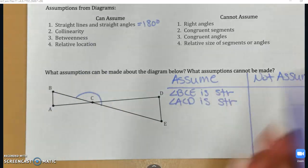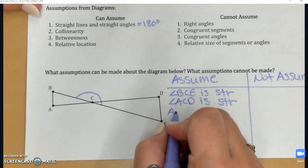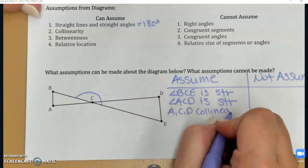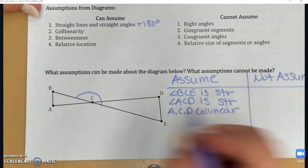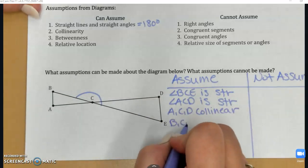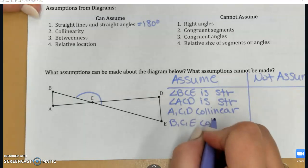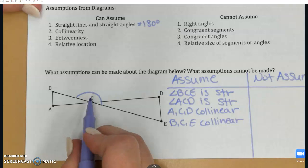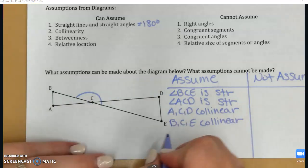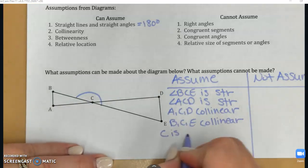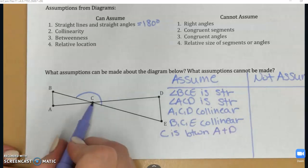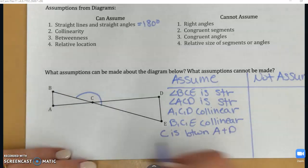Collinearity. ACD are collinear. On that same token, BCE are collinear. And betweenness. C is between A and D. And C is also between B and E.